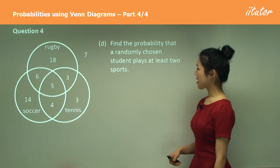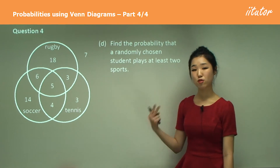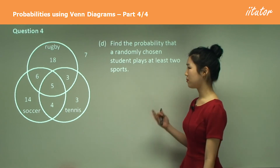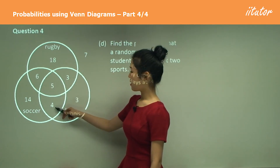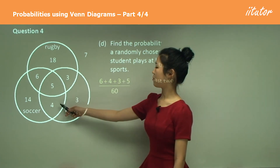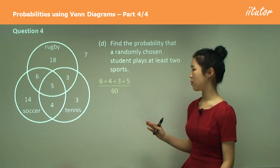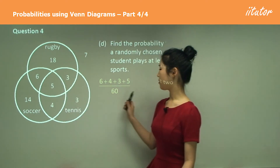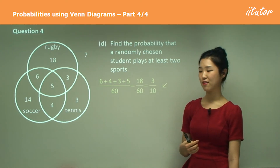Part D: find the probability that a randomly chosen student plays at least two sports. At least two means they could play two sports or three sports, but not just one or none. So that includes the two-sport regions — six, four, and three — plus the five who play all three, all out of 60. Adding them up and simplifying, you get three out of 10 as your final probability.